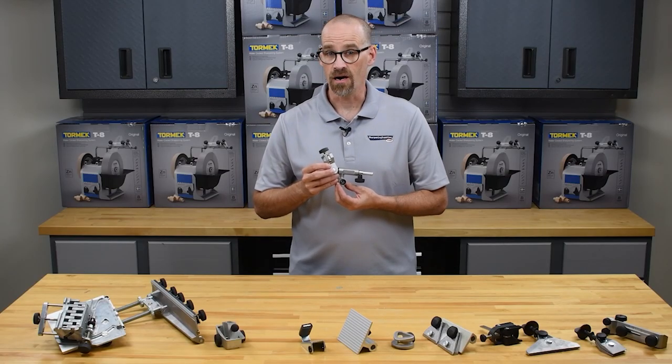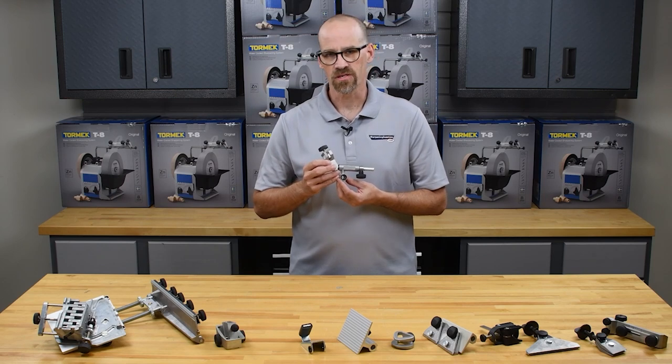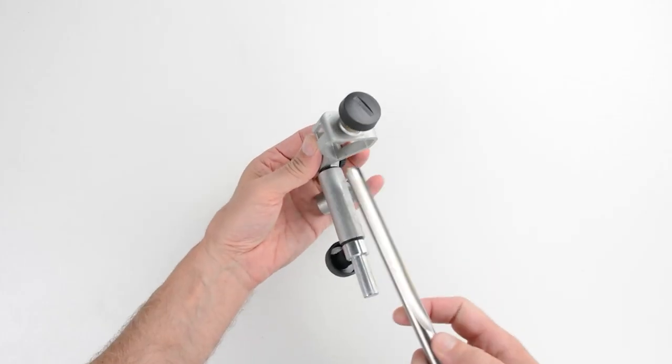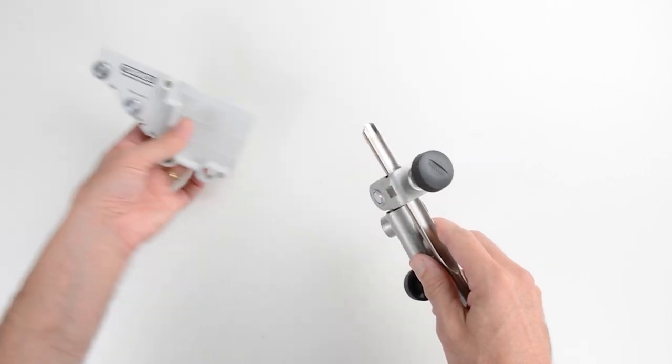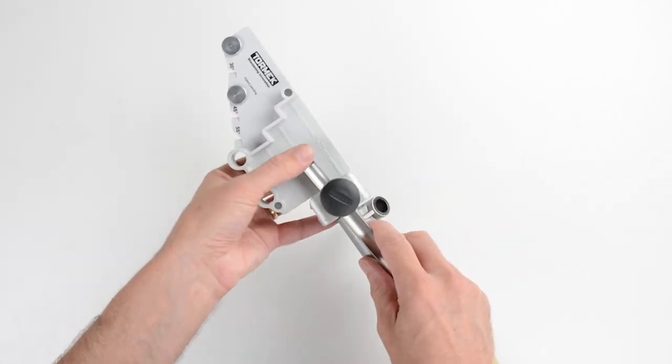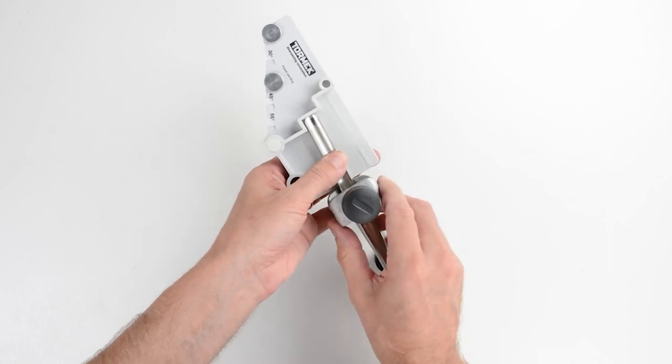The SVD186R will put compound curvatures on wood turning gouges. Insert the gouge into the jig. Use the TTS100 turning tool setter to set the protrusion.